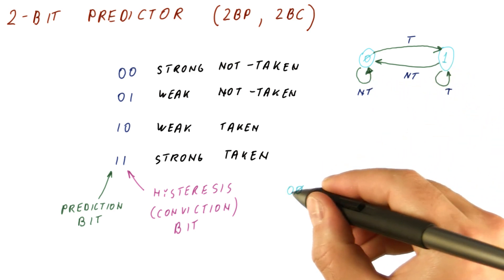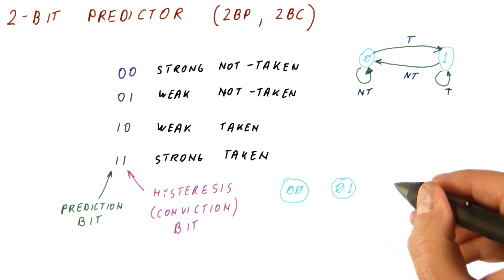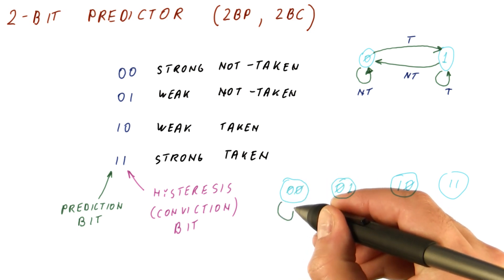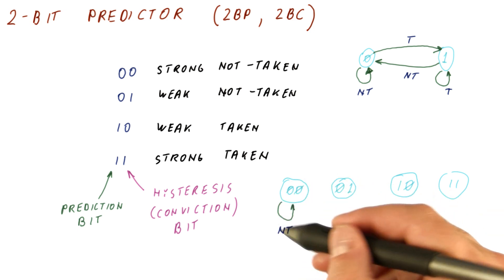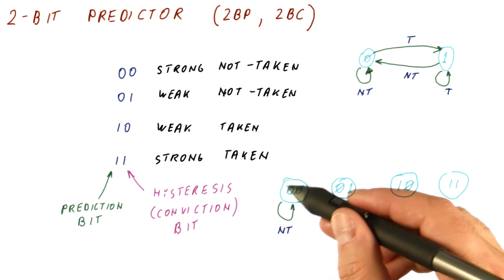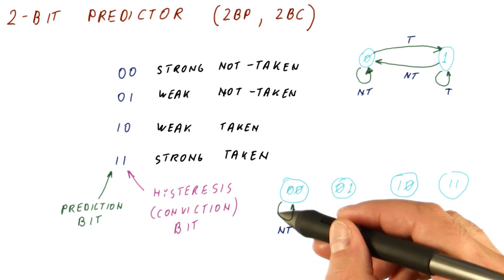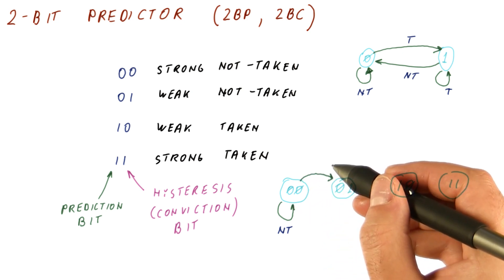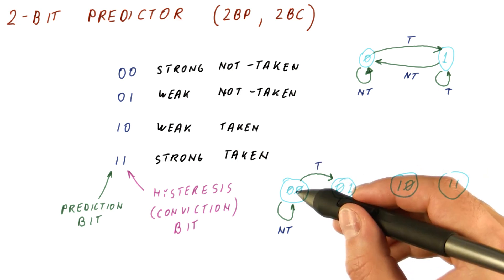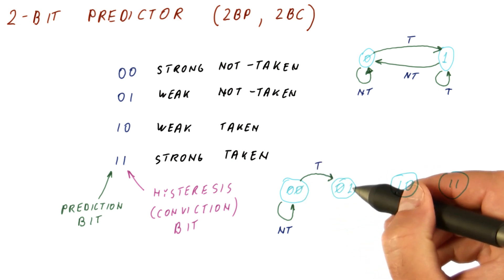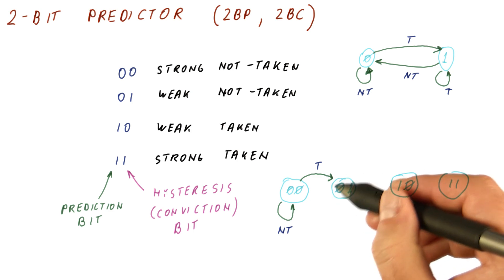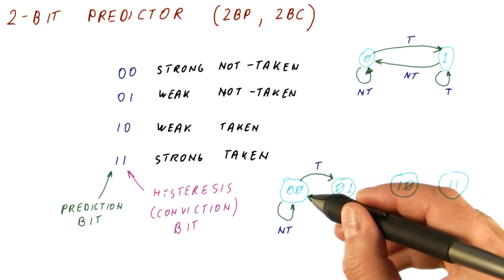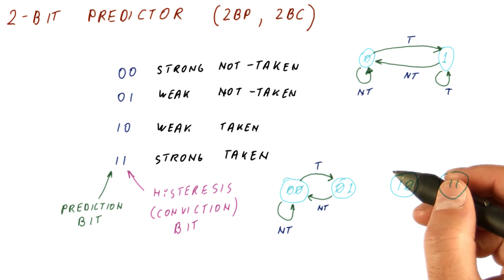With the two-bit predictor we have four states: 00, 01, 10, and 11. In the strong not-taken state, if we see a not-taken decision, we stay there — the outcome confirms our prediction. If we see a single taken decision from the strong not-taken state, we move to weak not-taken. We are still predicting not taken, just less convinced. In the case where not-taken is dominant, this taken outcome is the anomaly, and we move back to strong not-taken once we see the branch is not taken.